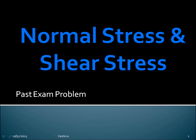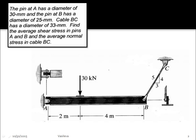Here's another example of normal stress and shear stress. This is a past exam problem and it is a rather difficult one. So if you can do this one, then that means you understand the concepts and the basics. We have this image and it says the pin at A has a diameter of 30 millimeters, the pin at B has a diameter of 25 millimeters, and cable BC has a diameter of 33 millimeters. Find the average shear stress in pins A and B and the average normal stress in cable BC.